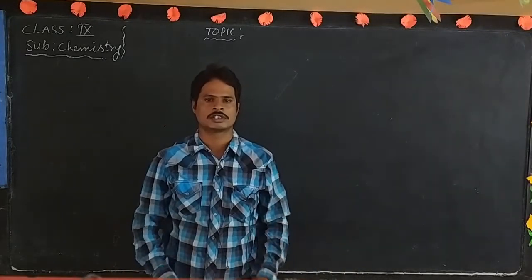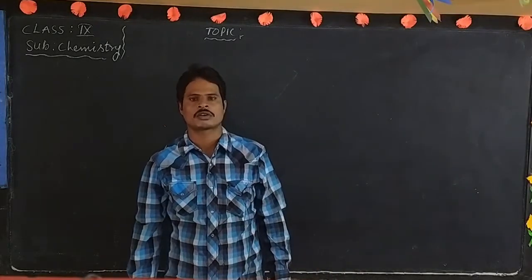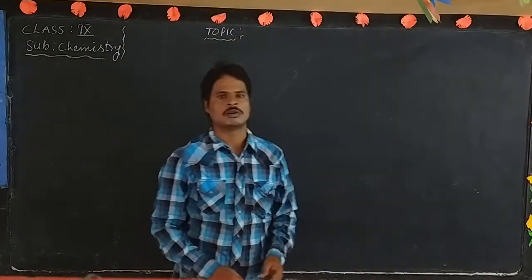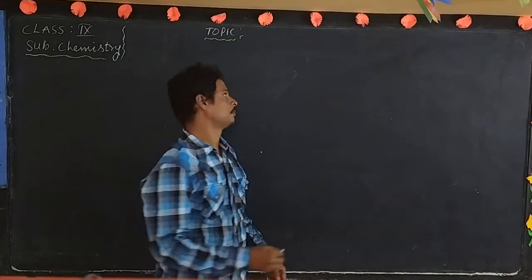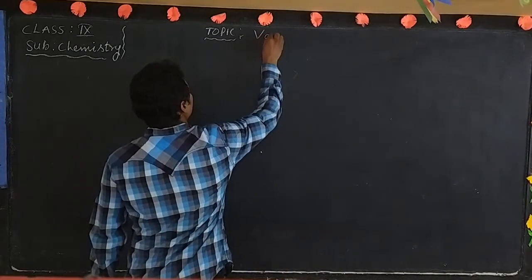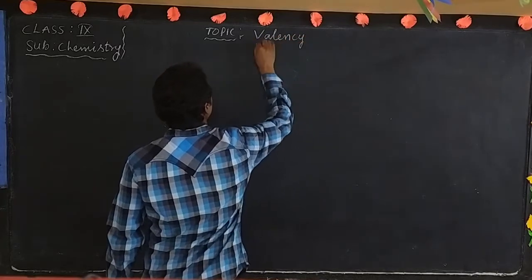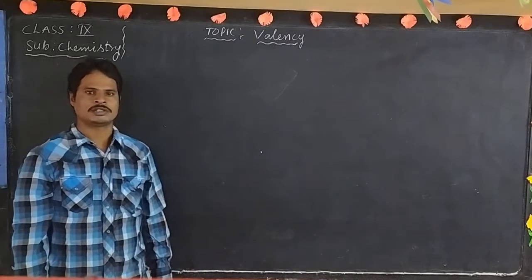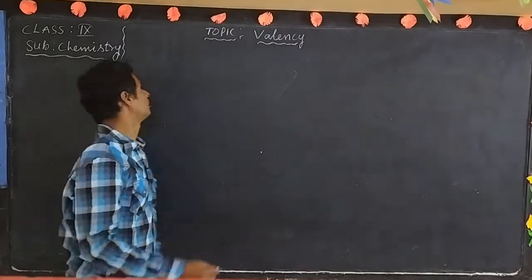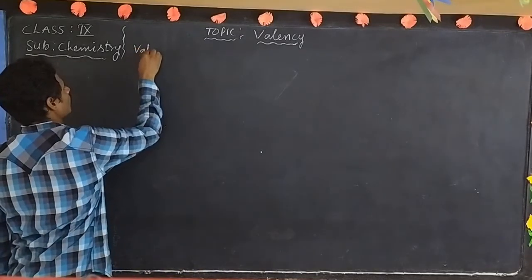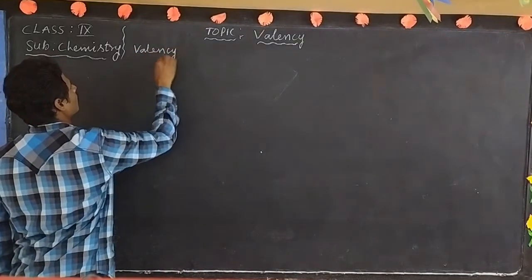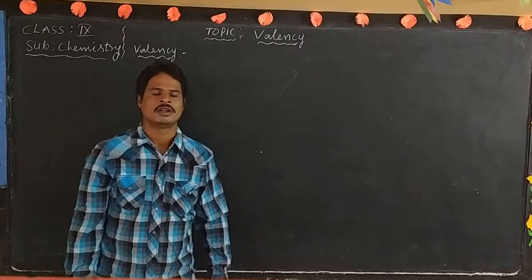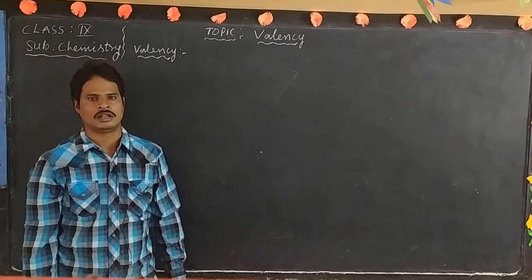Good morning students. Last class we discussed about how electrons are distributed in different shells of the first 20 elements. Today we discuss about valency. Valency is nothing but the combining capacity of an element with another element.